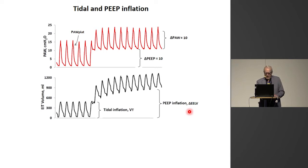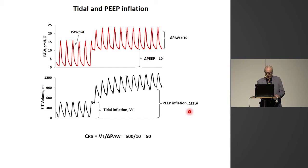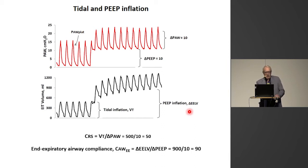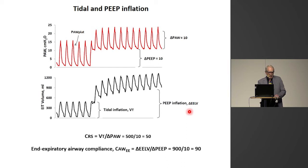So we have two ways of measuring compliance. We can do it the usual way — tidal volume divided by the airway driving pressure, in this case giving a compliance of 50. But we could also divide the delta EELV by the delta PEEP, and we get a compliance of 90. That is almost twice as high. So what is this end-expiratory airway compliance?